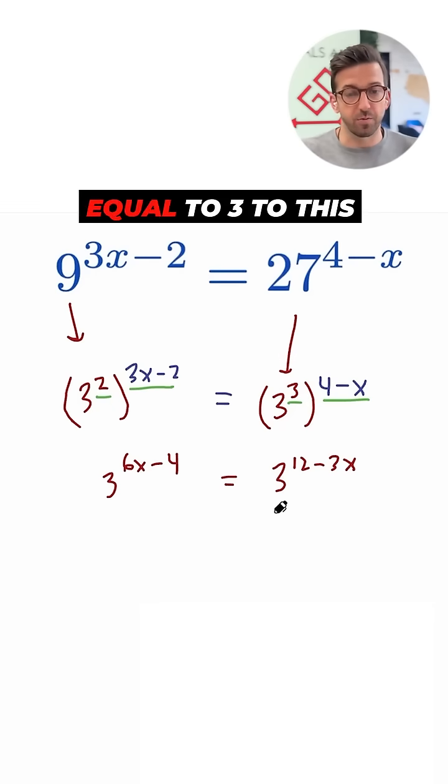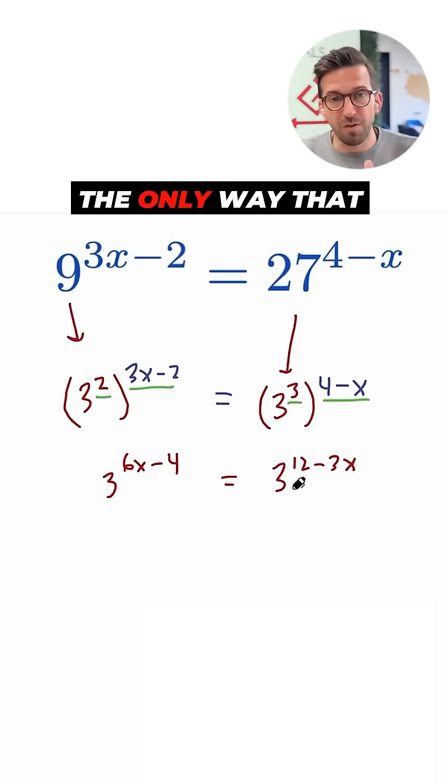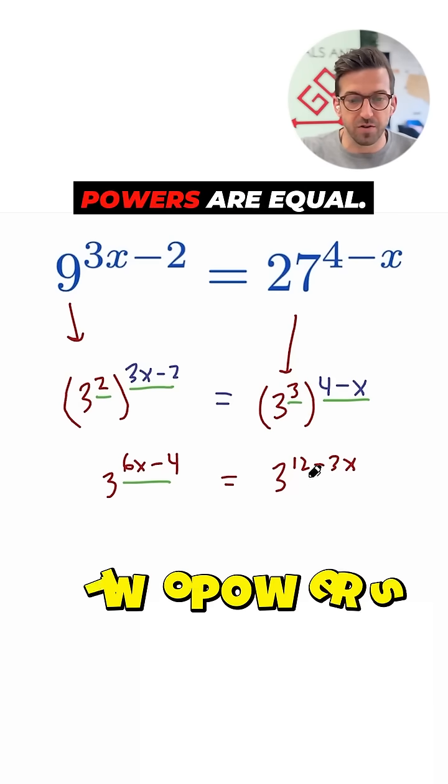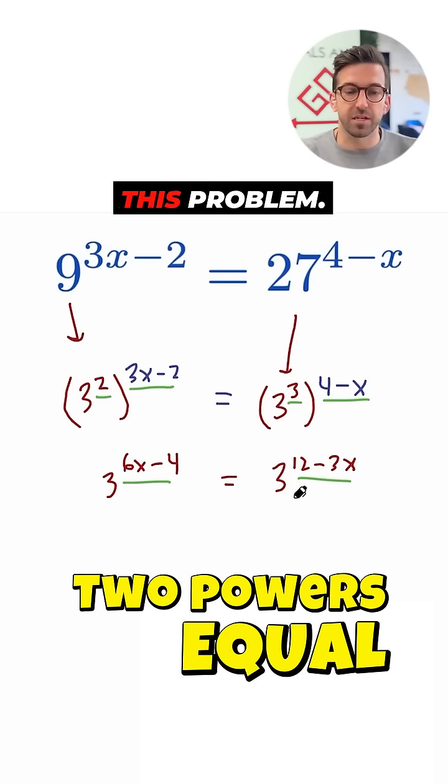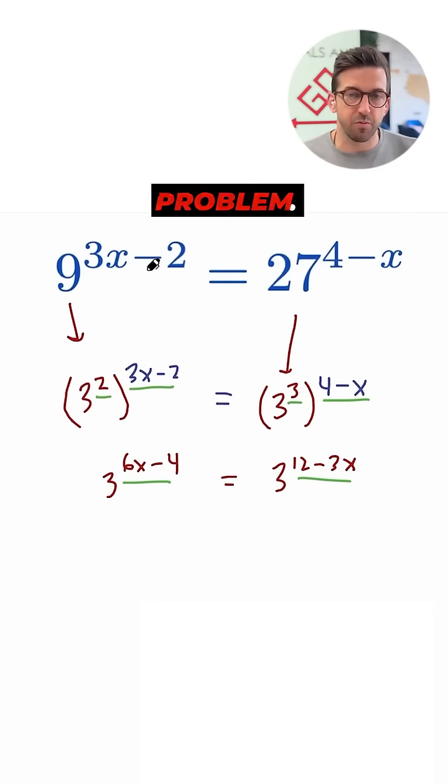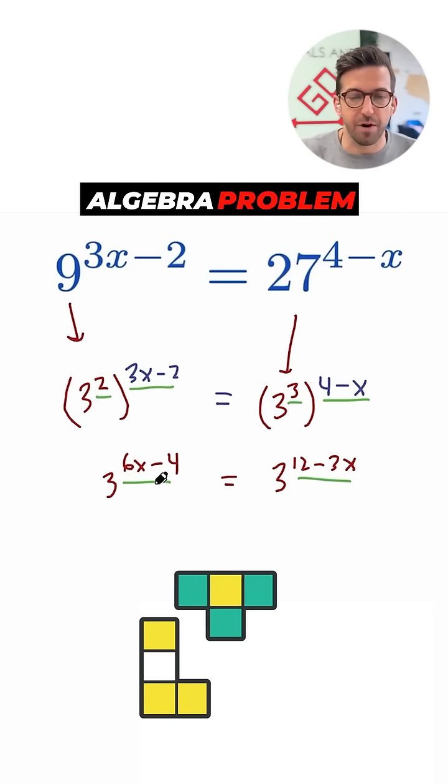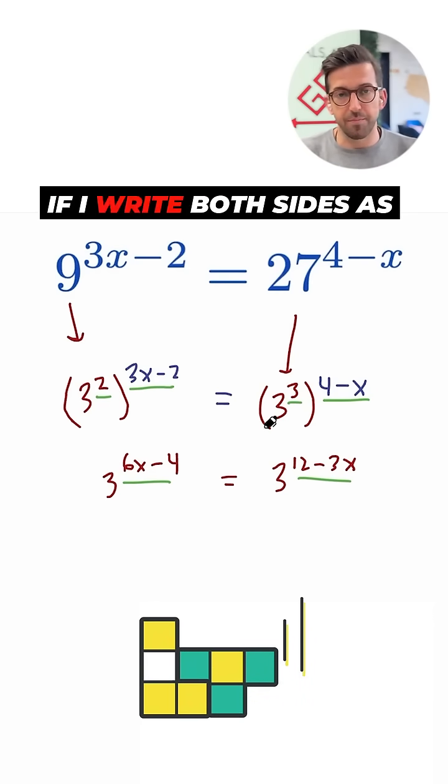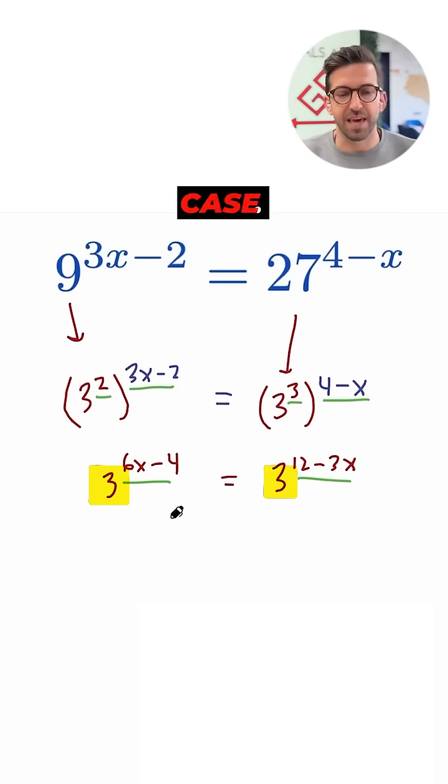If 3 to this power is equal to 3 to this power, the only way that works is if the two powers are equal, and that's the trick to this problem. I don't have to solve this weird exponential problem. I have a really simple algebra problem hiding inside of it if I write both sides as powers of 3 in this case.